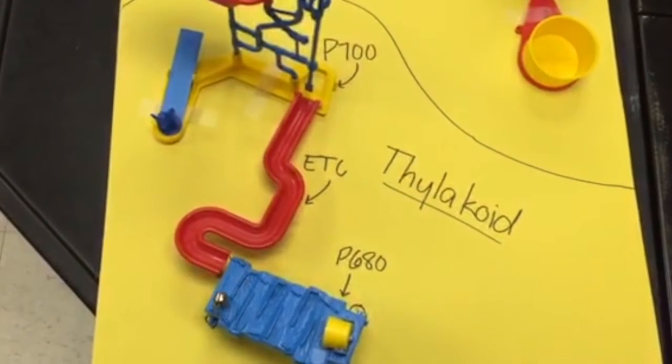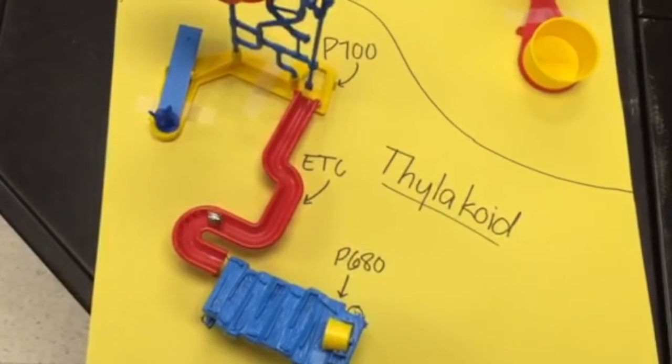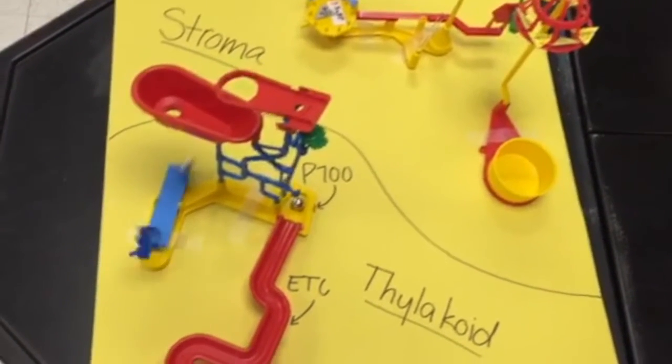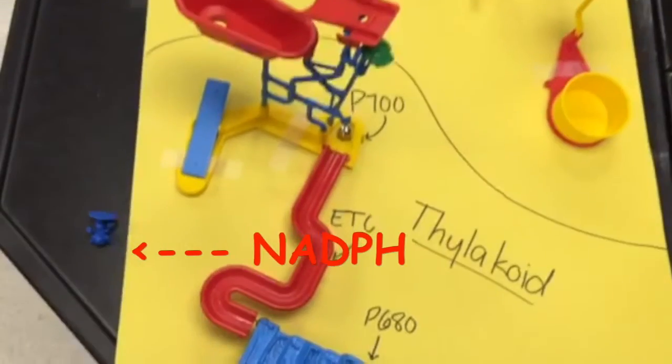After the ETC, another photon enters the P700 complex and energizes an electron which falls to a lower energy level, reducing NADP plus into NADPH.